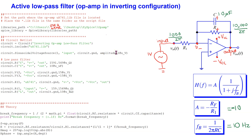Next, consider an active low-pass filter with the op-amp in inverting configuration. The values are chosen to give a break frequency of 10 Hz and a gain of minus 10. Using descriptive node labeling, we easily translate the filter circuit into the netlist, and we also program the theoretical transfer function.